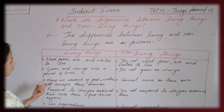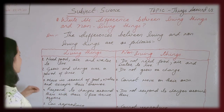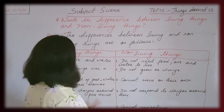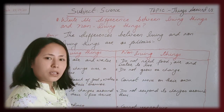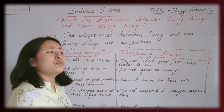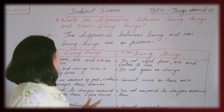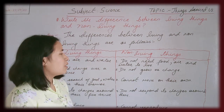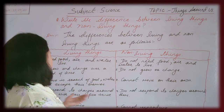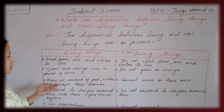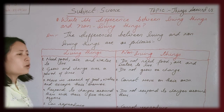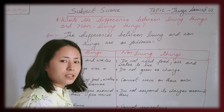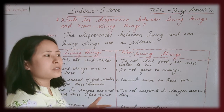Number three: living things move in search of food, water and to escape their enemies. Whatever is a living thing can move from one place to another to fulfill its needs. Non-living things cannot move on their own from one place to another. Living things can move to protect themselves or go from one place to another, and can move any body part.